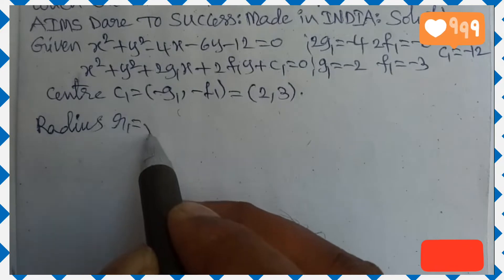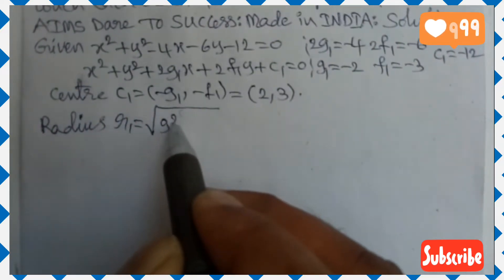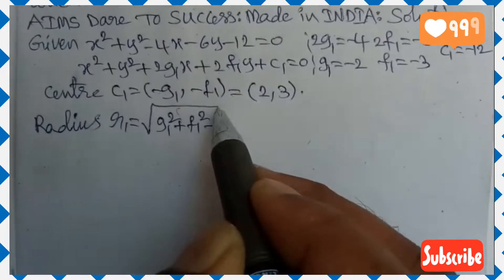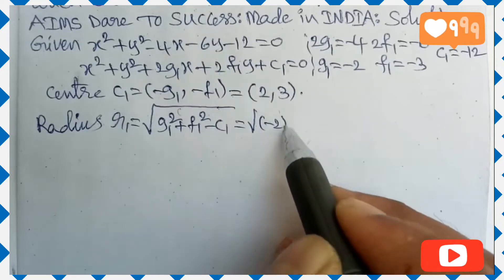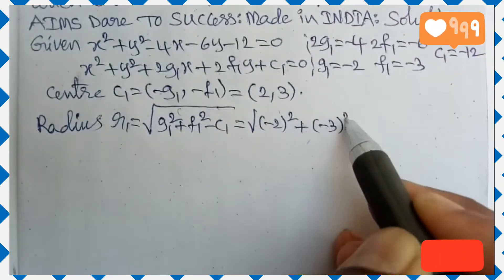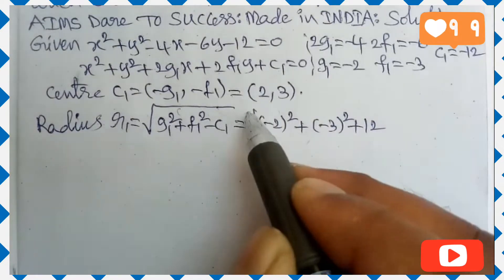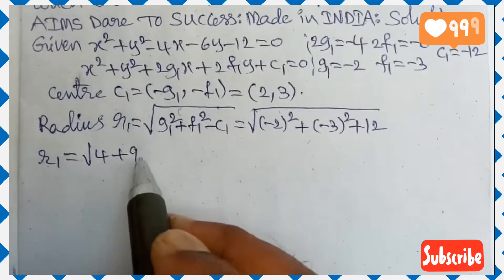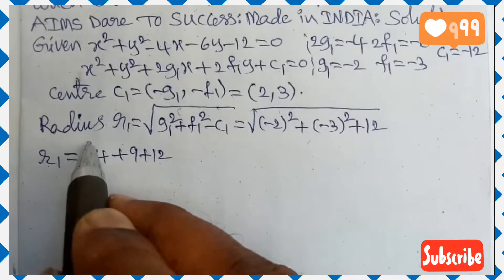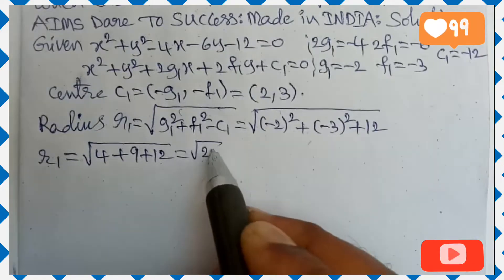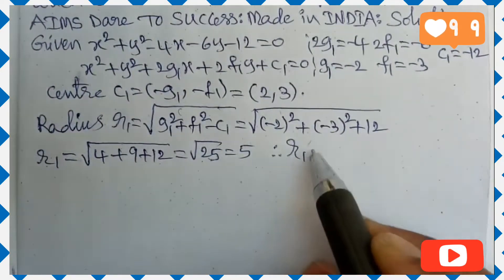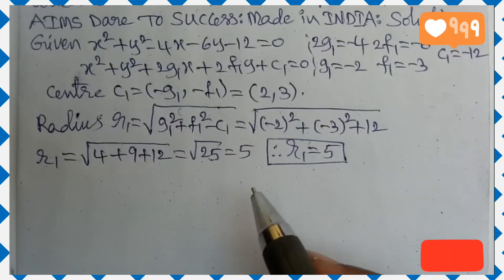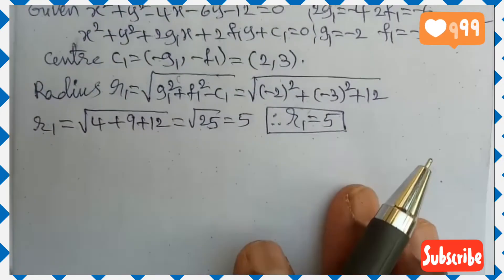So r₁ = √(g₁² + f₁² − c₁) = √((−2)² + (−3)² − (−12)) = √(4 + 9 + 12) = √25 = 5. So radius r₁ = 5 from the first circle.